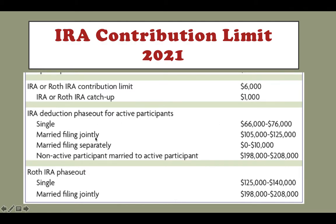Similarly, for married filing jointly: if your modified AGI is less than $105,000, you can deduct both yours and your spouse's contribution from your tax return. However, if your modified AGI is greater than $150,000, you are not eligible to deduct the contribution to your traditional IRA. For married filing separately, basically you cannot deduct any contribution.